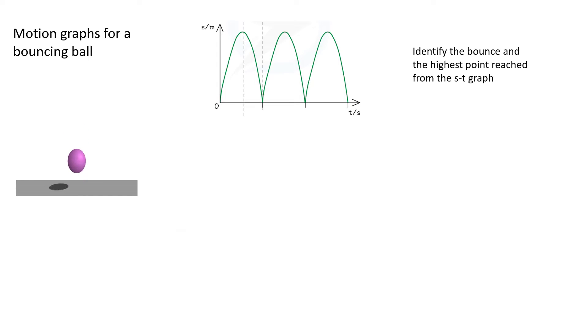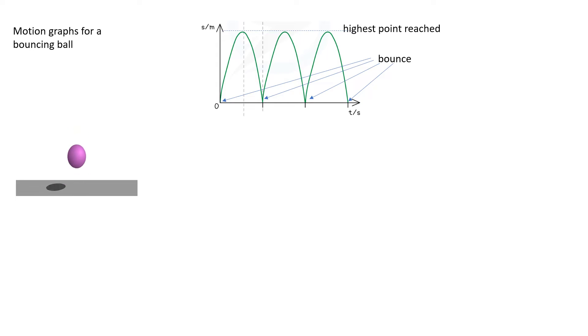Can you identify from the displacement time graph the points where the ball bounces and the highest point reached? The bounces are shown here as the displacement comes back to zero and the peaks are shown here as the ball reaches its peak.